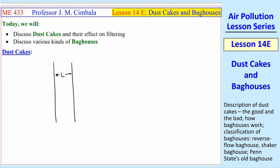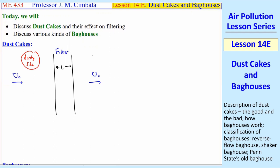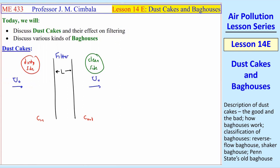So what is a dust cake? Consider some filter with airspeed before and after the filter. Upstream of the filter is called the dirty side, and downstream of the filter is called the clean side. You have some mass concentration coming in and some mass concentration coming out, as usual. But over time, you start to get dust collecting on the surface of the filter. A lot of the dust collects inside as well, but we're interested in what happens on the outside of the filter. This is called a dust cake — just a buildup of particles on that filter.